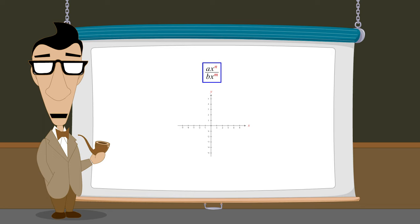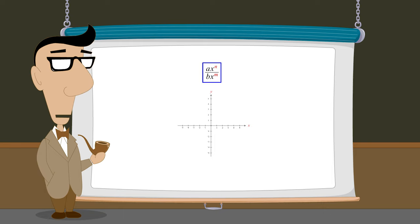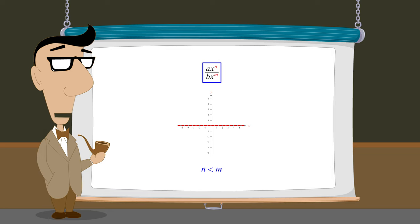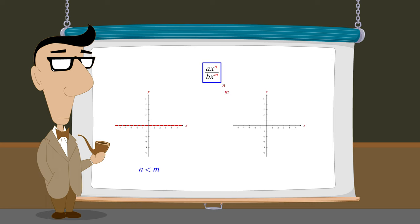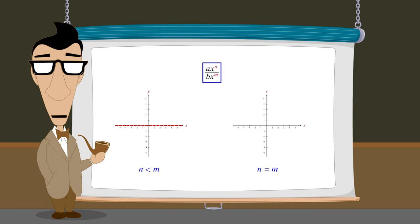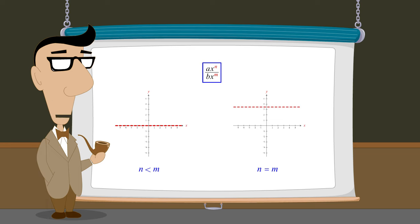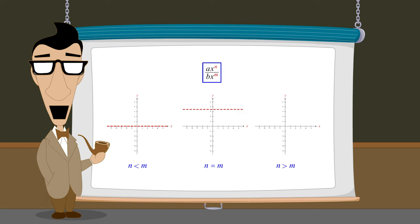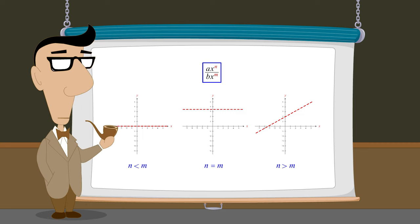In the previous lecture, we saw that when the value of the numerator's largest exponent n is less than the denominator's largest exponent m, the function will have a horizontal asymptote located on the x-axis. And when the values of the numerator and denominator's largest exponents are the same, the horizontal asymptote will be located either above or below the x-axis. On the other hand, when the numerator's largest exponent is greater than the denominator's largest exponent, the function will have either an oblique asymptote or a curvilinear asymptote.